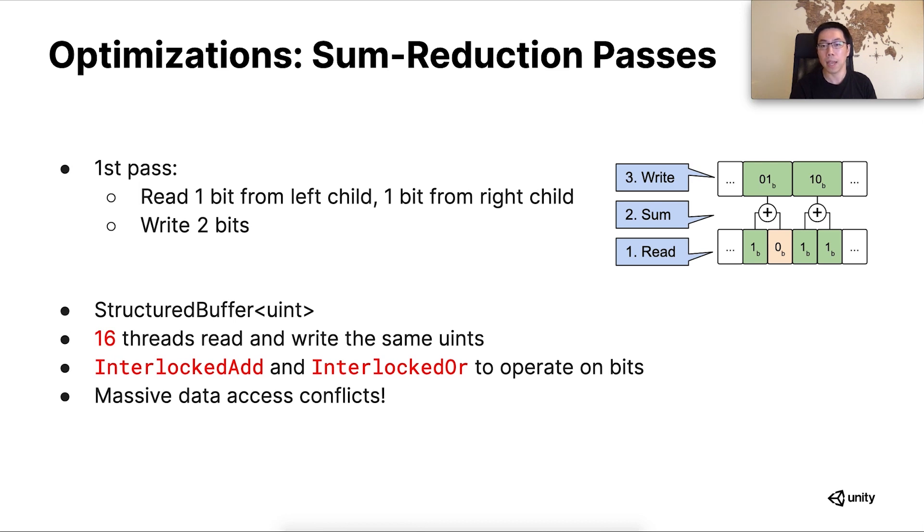Secondly, our buffer for the CBT data is 4 bytes wide. It means that if we did naively implement this code, dispatching one thread for one level 2 parent node, we would end up having 16 threads write to the same unit in the buffer. And because of that, we have to use atomic operations, which are interlocked and and interlocked or in HLSL, to operate on the bits to make sure the concurrent write is done correctly. This for sure leads to massive data access conflicts between threads.